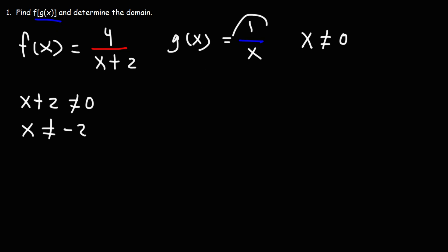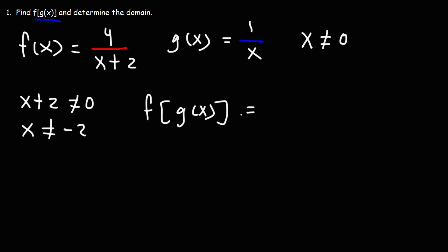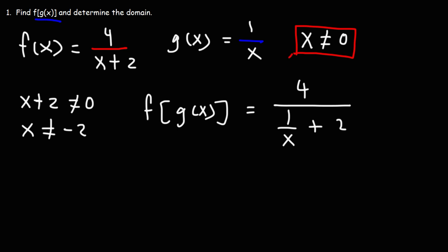We're going to take g and put it inside of f — replacing x with g, or 1 over x. So f of g of x is going to be 4 over (1 over x) plus 2. When finding the domain of a composite function, if x is not in the domain of g, then it can't be in the domain of the composite function f of g of x.